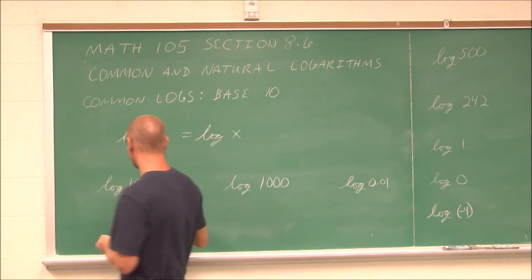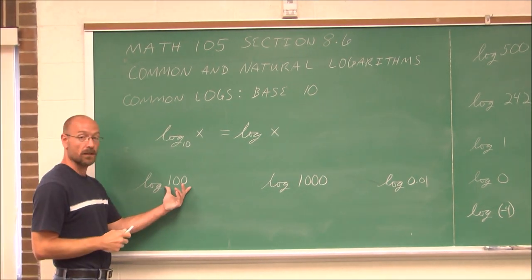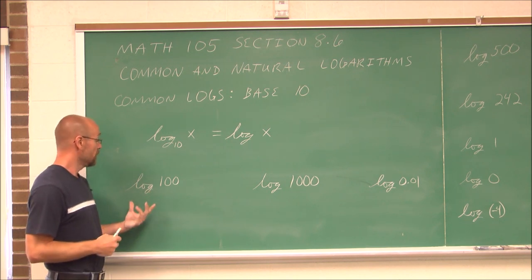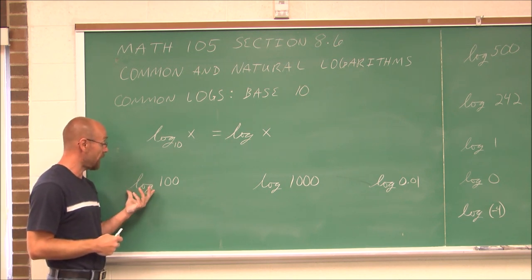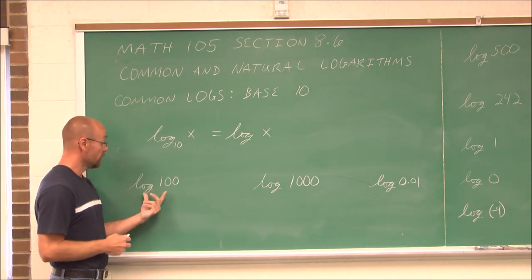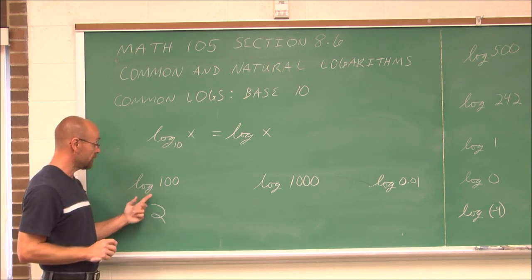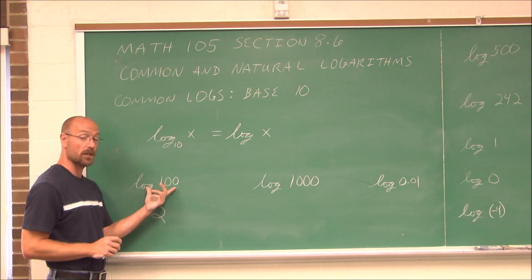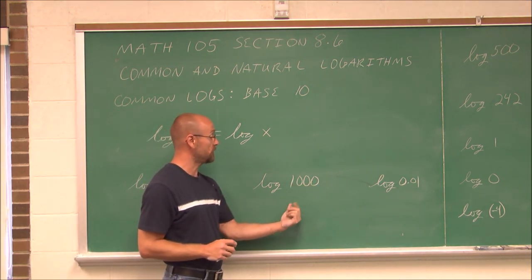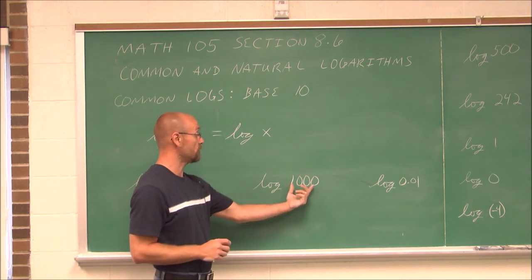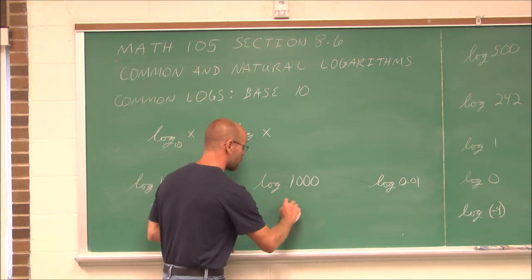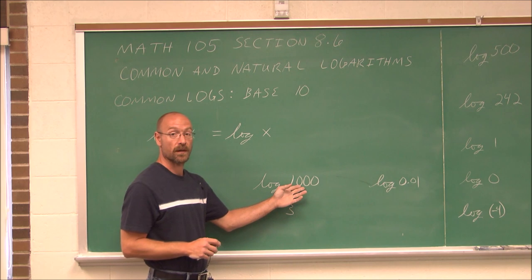Let's look at an example. We have log of 100. Being that the base isn't indicated, it is base 10. It asks: 10 to what power is 100? I know 10 squared is 100, so this value is 2. What about log of 1,000? This is a factor of 10, 10 to the third. So log of 1,000 — assuming base 10 — is 3.